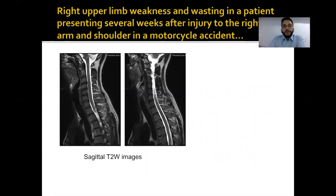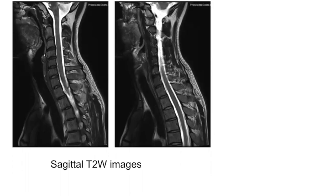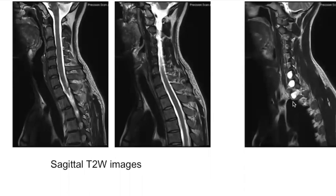Here is an interesting case — a patient who sustained injury in a vehicle accident with injury to the right arm and shoulder, presenting several weeks later with right upper limb weakness and wasting. When imaging patients with suspected brachial plexus injury, the first sequence should always be a sagittal T2 sequence of the cervical spine. The cervical cord here looks perfectly fine with no evidence of contusion, edema, or hemorrhage. But slightly far laterally on the right side, we can see well-defined cystic lesions in the neural foramina at C6-7, C7-D1, and D1-2.